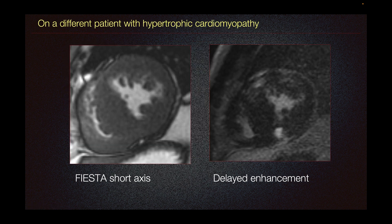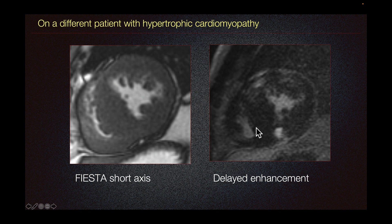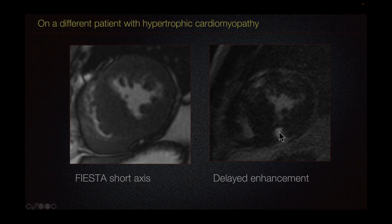On a third patient with hypertrophic cardiomyopathy we see marked thickening and hypertrophy of the intraventricular septum. On our delayed gadolinium enhancement images we see delayed gadolinium enhancement at the insertion points of the right ventricle.